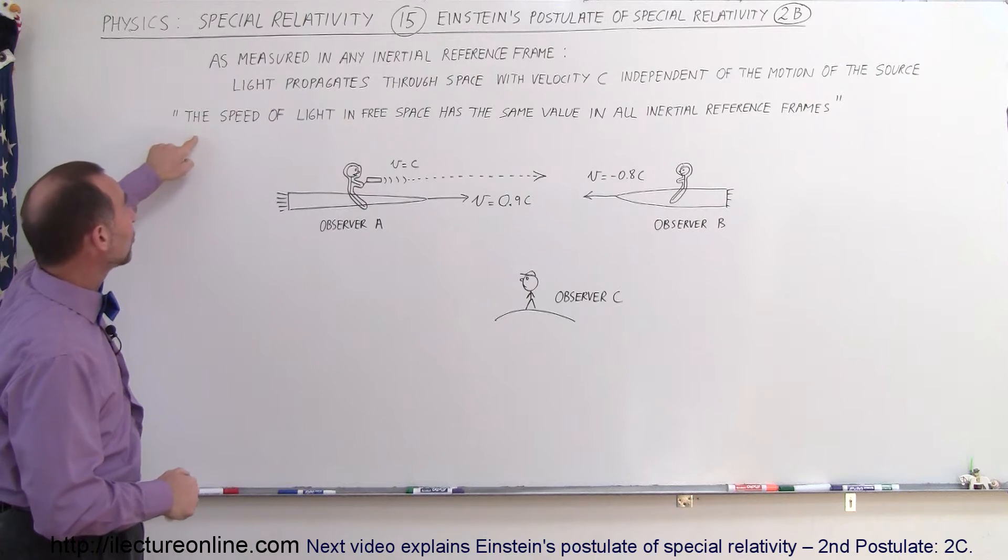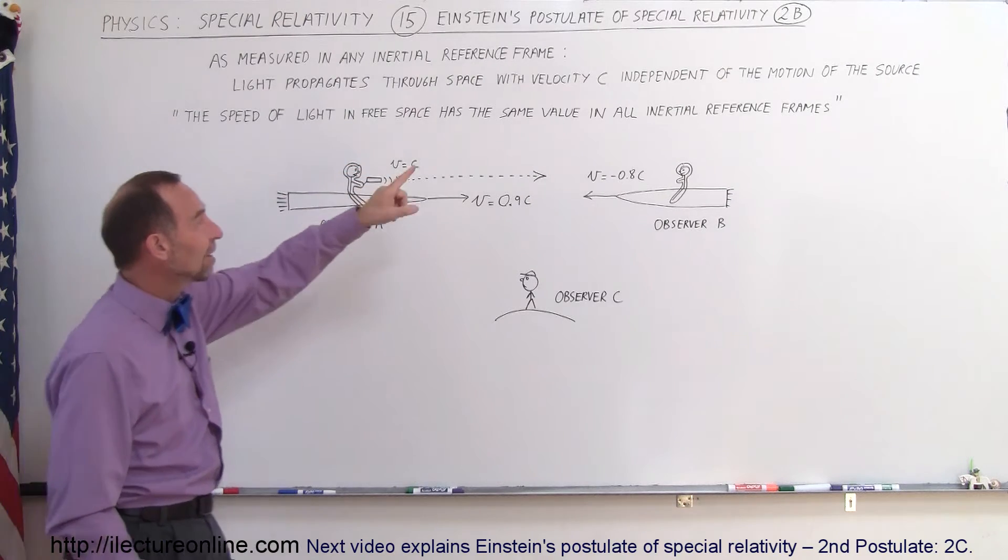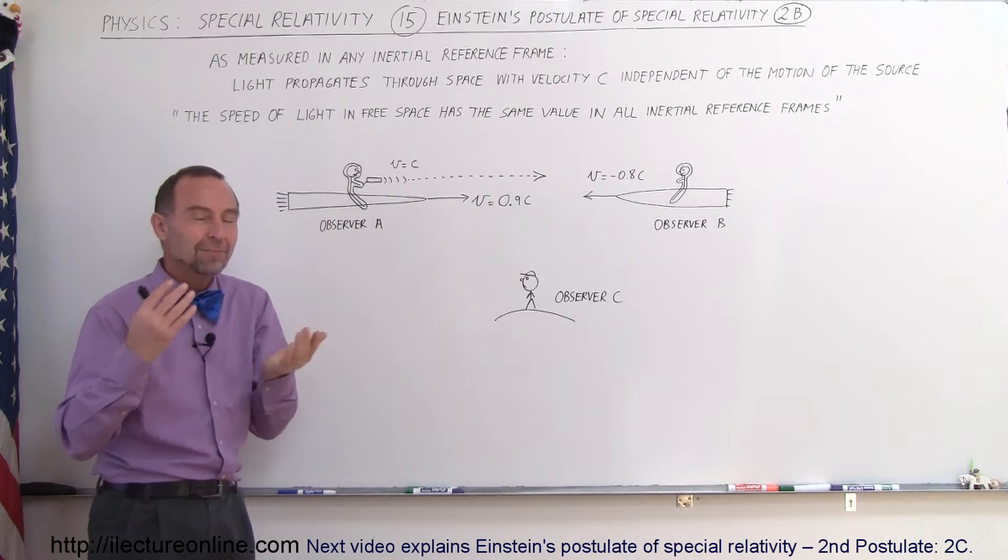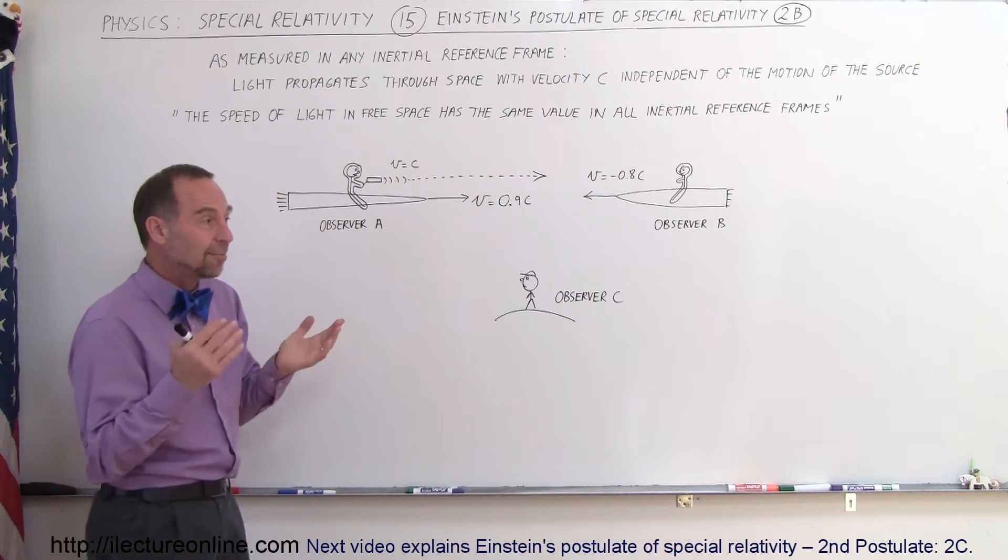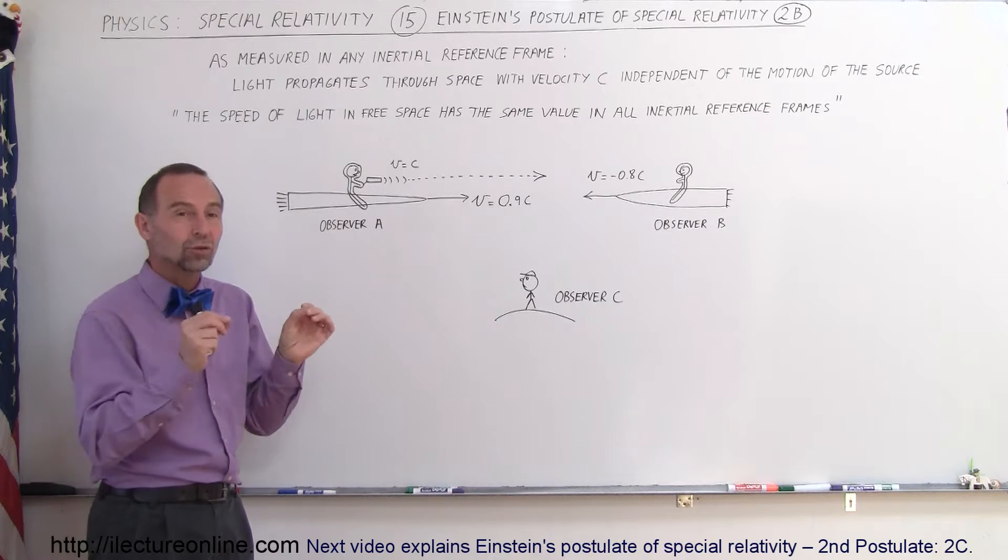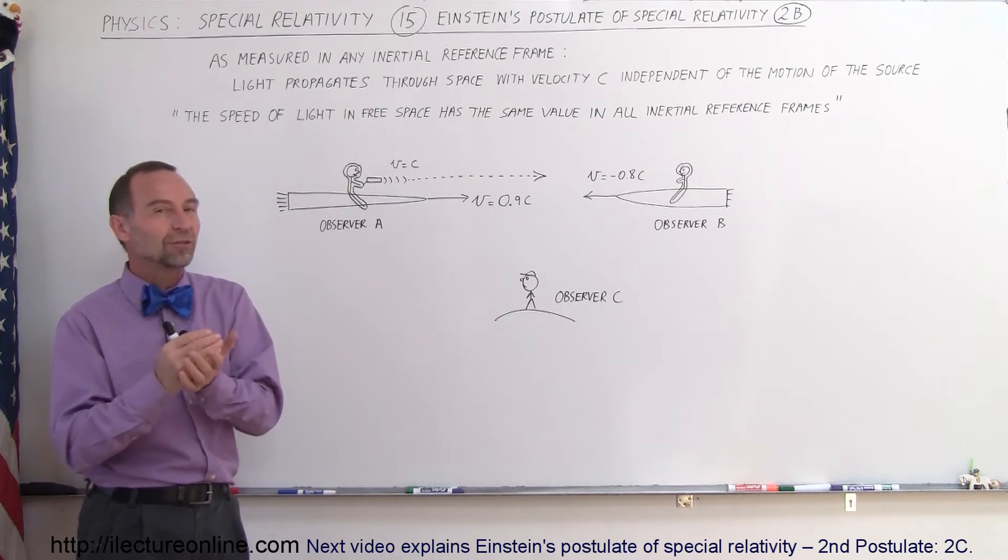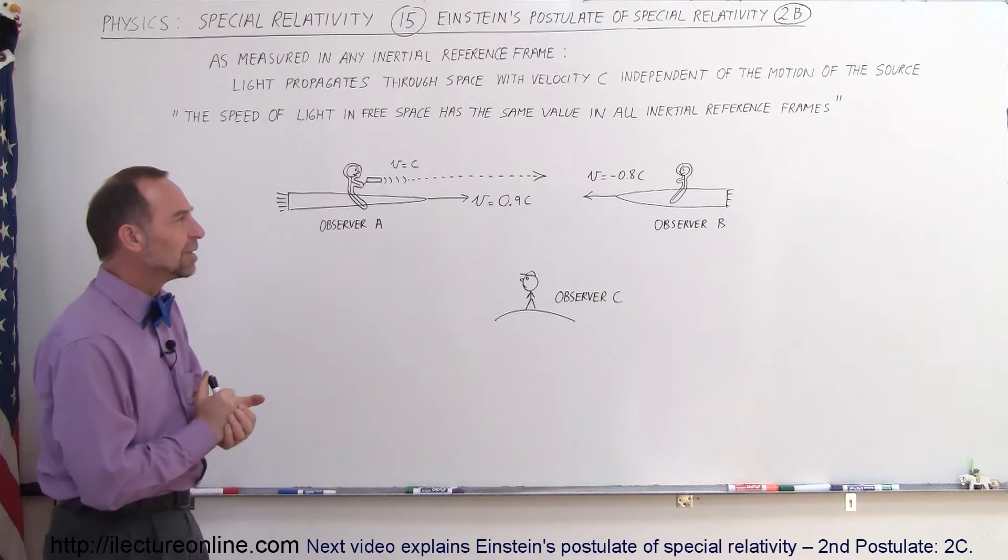So Einstein went on to say that the speed of light in free space has the same value in all inertial reference frames, which means it didn't matter what the source was doing or what the observer was doing. The speed of light would always equal c, 3 times 10 to 8 meters per second.